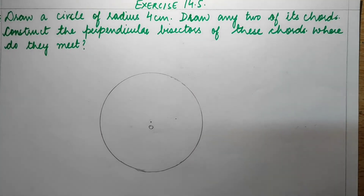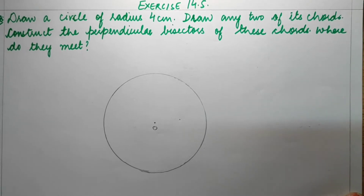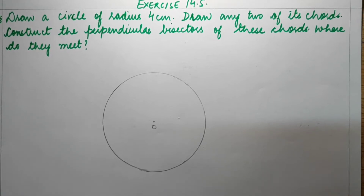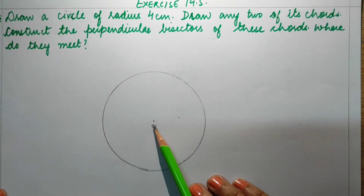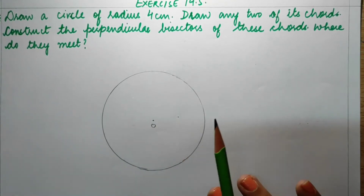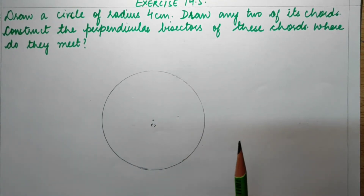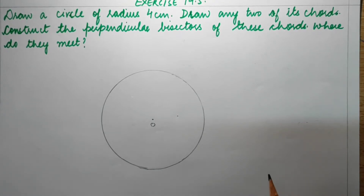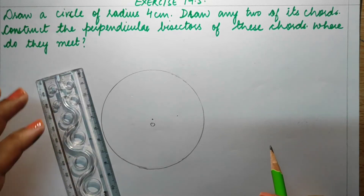Good morning everyone. We are going to do Exercise 14.5, question number 8. It says you have to draw a circle of radius 4 cm, and as you can see we have drawn a circle with radius 4 cm. Now what we need to do is draw any two of its chords, so let's draw any two chords here.